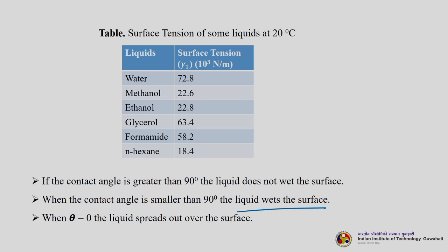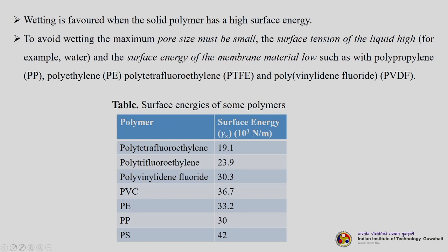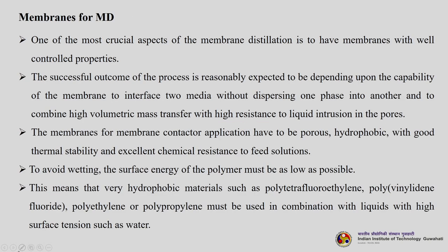When contact angle equals 0, the liquid spreads over the surface. To avoid wetting: the maximum pore size must be small, the surface tension of the liquid should be high (e.g., water), and the surface energy of the membrane material should be low — such as with polypropylene, polyethylene, polytetrafluoroethylene (PTFE), or polyvinylidene fluoride (PVDF). Surface energy values: PTFE 19.1, polytrifluoroethylene 23.9, PVDF 30, PVC 36.7, and polysulfone 42 mJ/m².